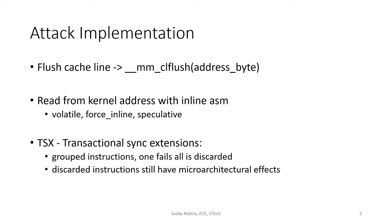For replicating this attack, we need to flush the addresses that we will use as the covert channel from the cache. Then, with inline assembly, we will read the kernel address space. Note that this must be declared as volatile so that the compiler doesn't optimize anything. Reading from a kernel address will, of course, raise a hard fault called a segmentation fault.